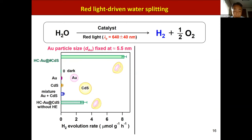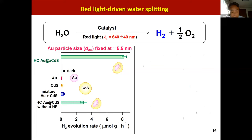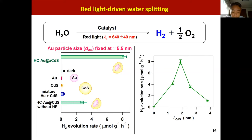We carried out water splitting under irradiation of red light. This figure compares the photocatalytic activity of various samples with gold particle size fixed at about 5.5 nm. As you can see, gold and CdS are almost inactive, but a physical mixture shows low activity. Strikingly, the non-heteroepitaxial junction half-cut Au core CdS shell shows much higher activity, which further increases more than twice in the heteroepitaxial junction sample. The right figure shows the effect of CdS shell thickness on photocatalytic activity, which strongly depends on shell thickness, reaching a maximum around 2 nm.